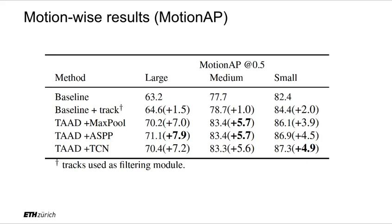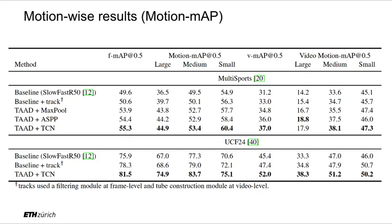Here we show frame-level results on the multi-sports dataset split based on motion categories, and we compare our method with the baseline. Our method outperforms the cuboid-based baseline by a large margin, especially in the case of large motion instances. Gains in large motion instances are almost twice the gains made on small motion instances. We see similar trends on video-level action tube detection on the UCF24 dataset, where our method outperforms the baseline by a large margin across the board.